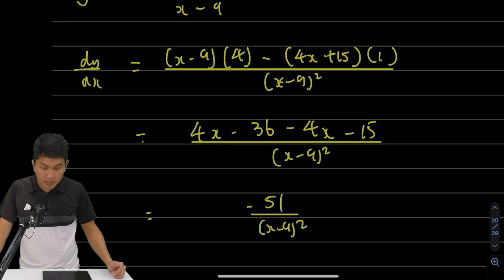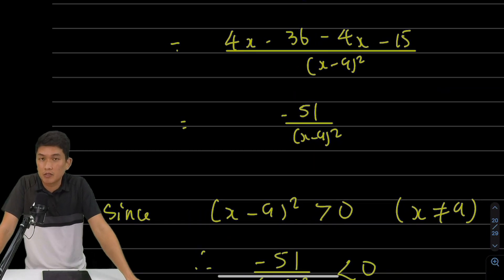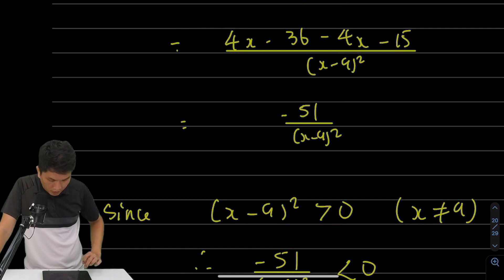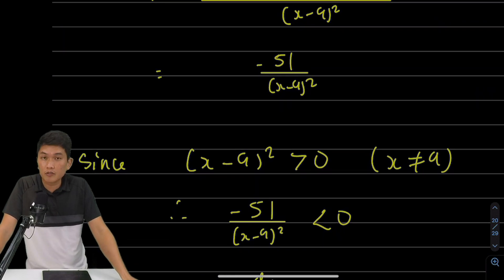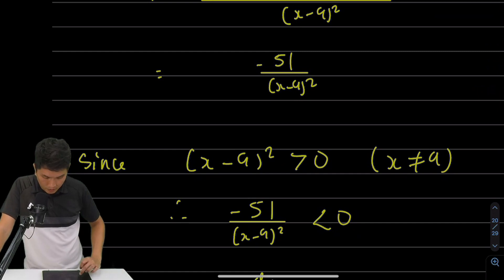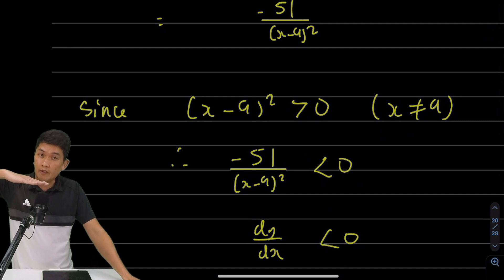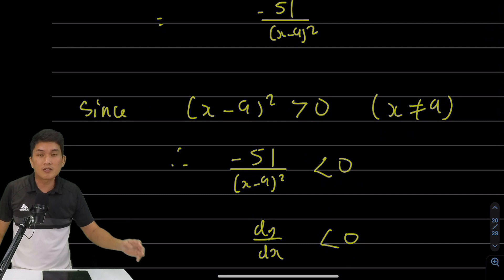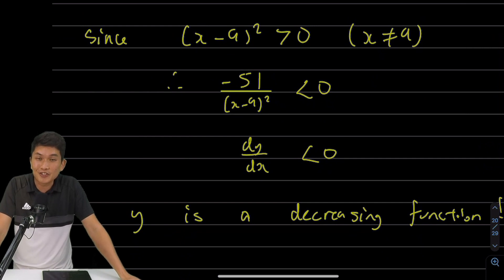Looking at the gradient function, we can see that it's always negative. Why is it always negative? Let's look at the denominator: (x minus 9) all squared is always going to be positive. It could be 0 when x equals 9, but the question has assured us that x is not equal to 9. So x minus 9 all squared is always positive, which means the fraction negative 51 over (x minus 9) all squared will always be negative. That is our dy/dx, meaning the gradient is always negative at any point of the graph. If you were to draw a tangent to the curve at any point, it is always sloping downwards — the graph is always decreasing. From that, we can conclude y is a decreasing function. That is the answer for question 8a.